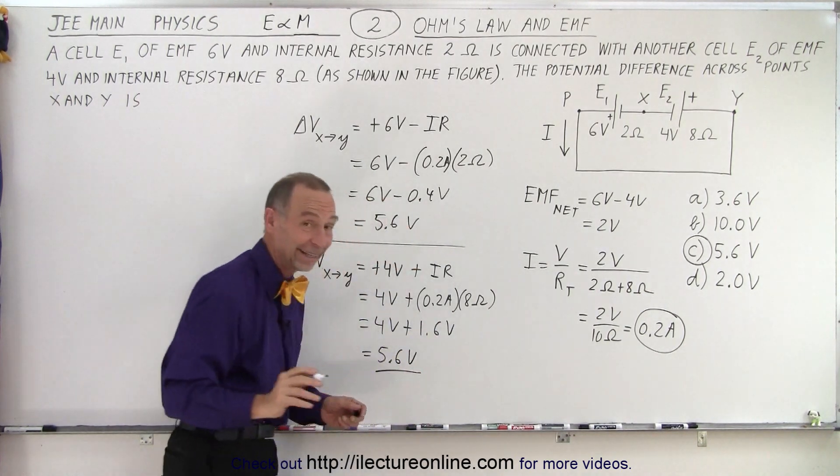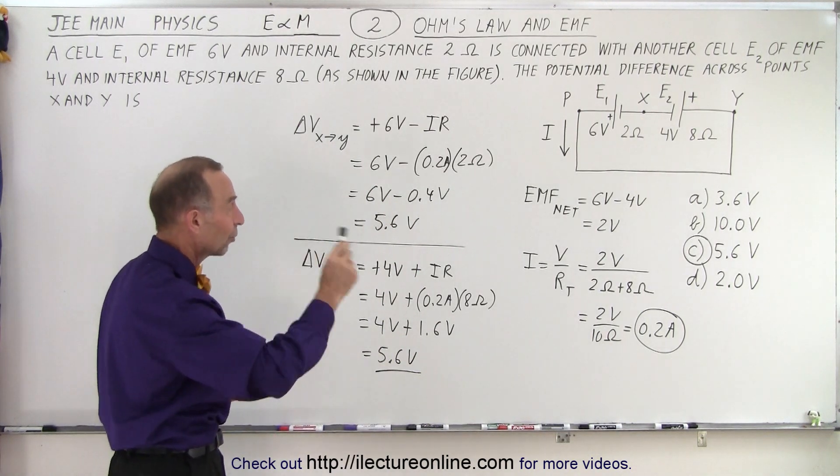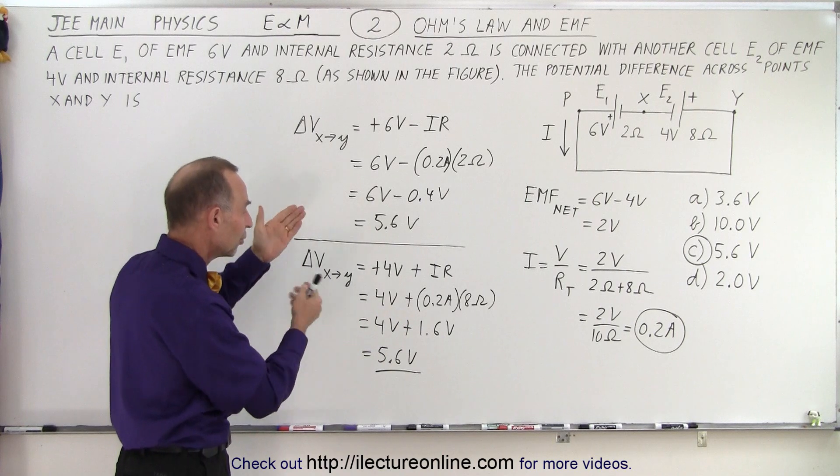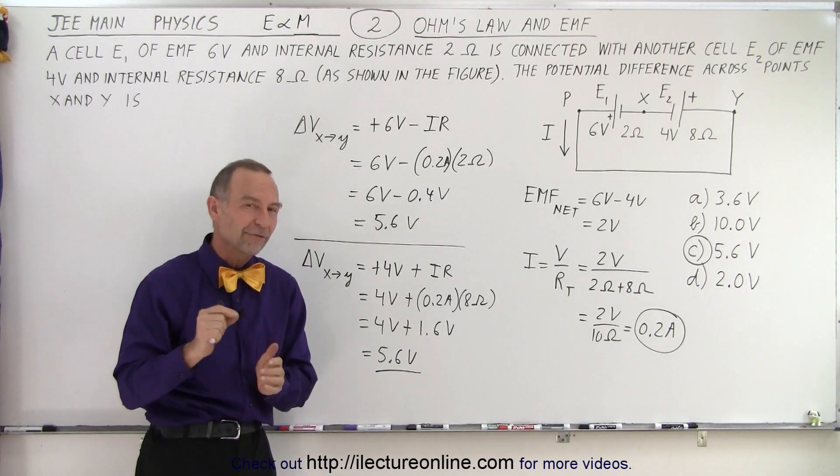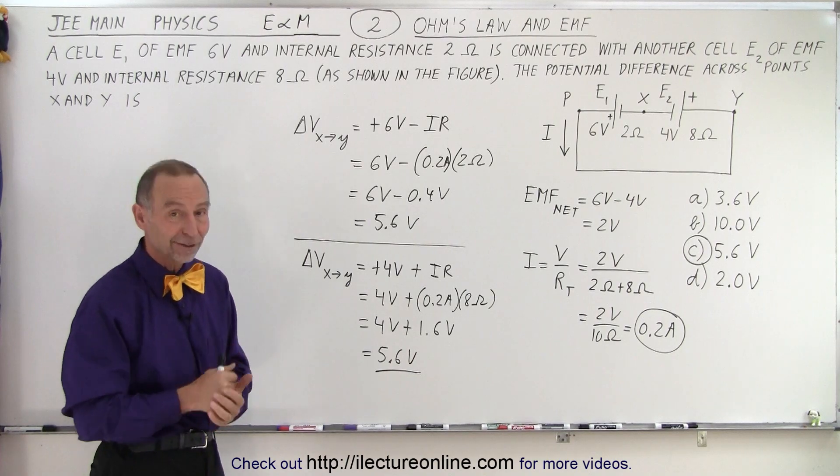We wouldn't expect anything different of course, so it didn't matter which way you went. Going from X to Y in either direction you're going up with a change in voltage of 5.6 volts, both point to answer C, and that is how it's done.